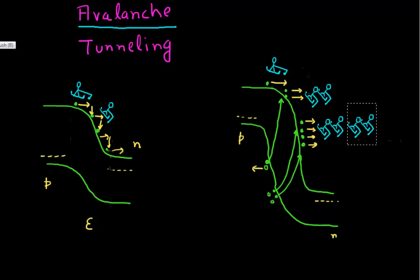This can happen if you're skiing down one of the steeper slopes — like a black diamond — and this is similar to the analogy. So you need a very high field, or a very steep slope, for this kind of phenomena to happen.